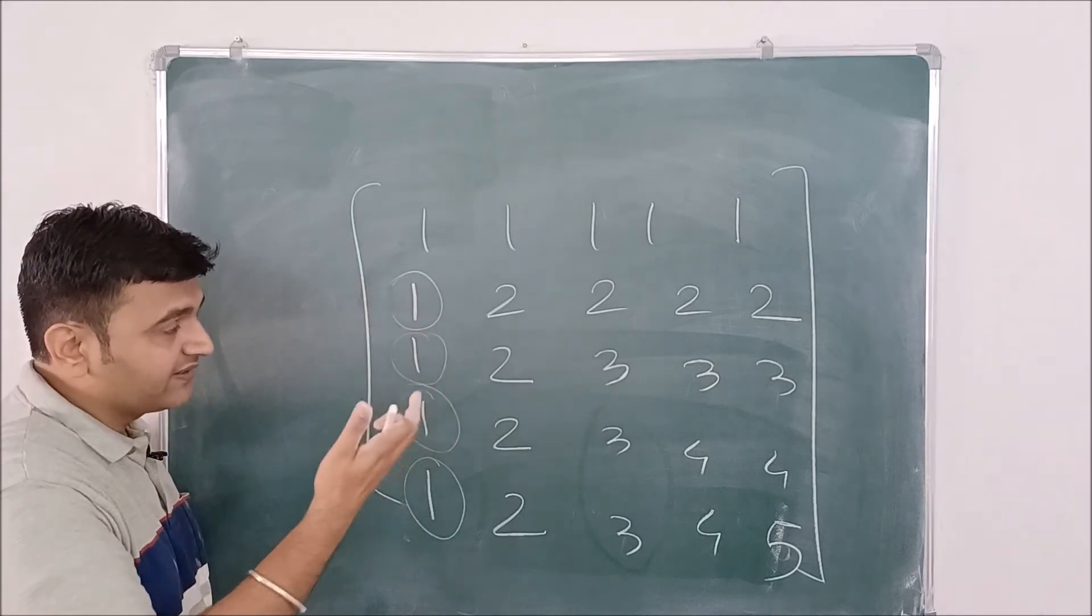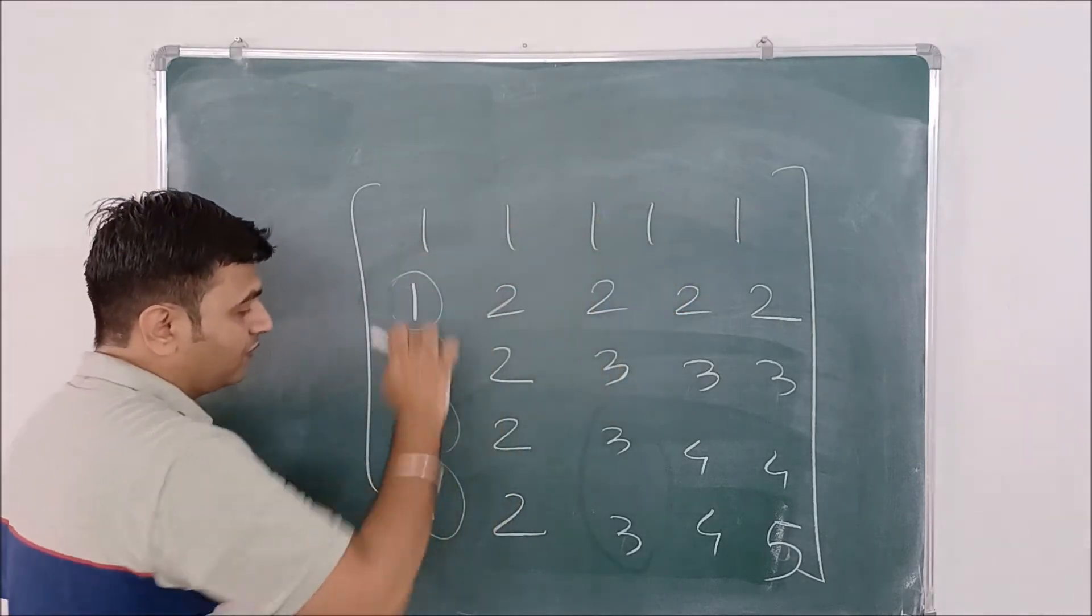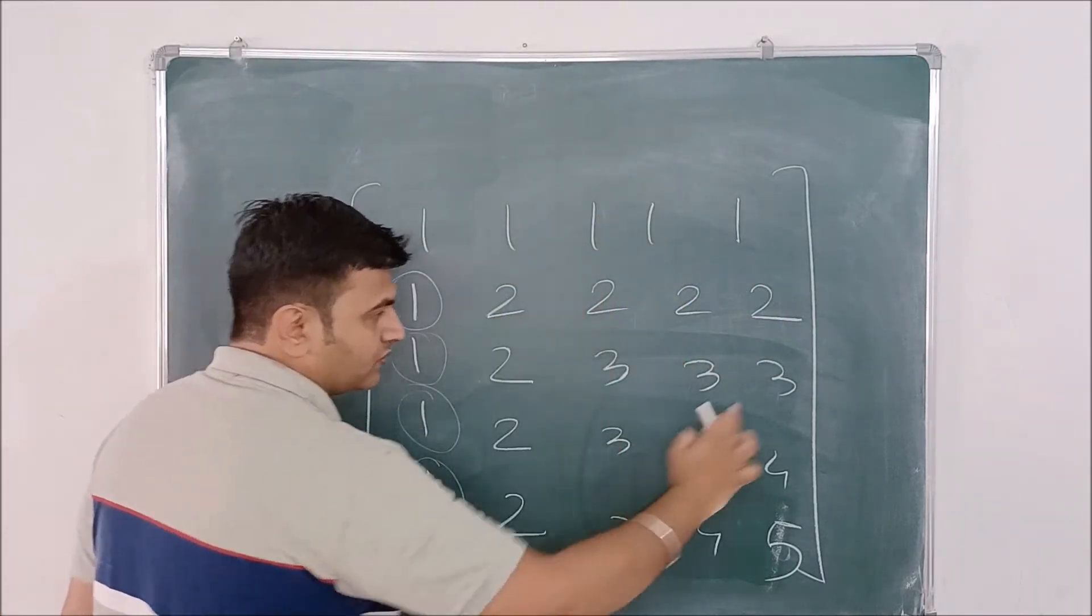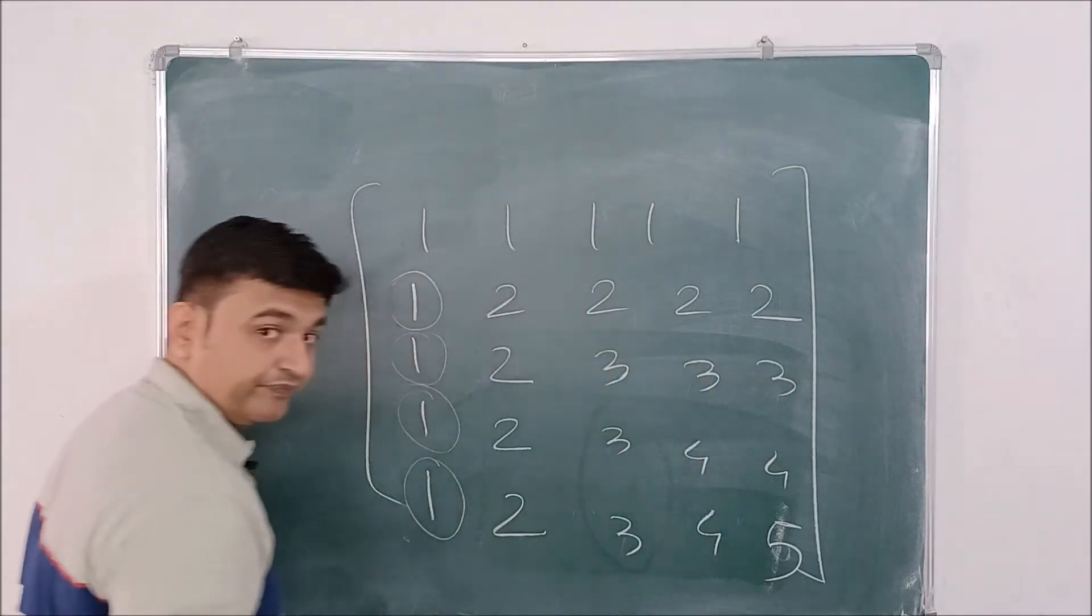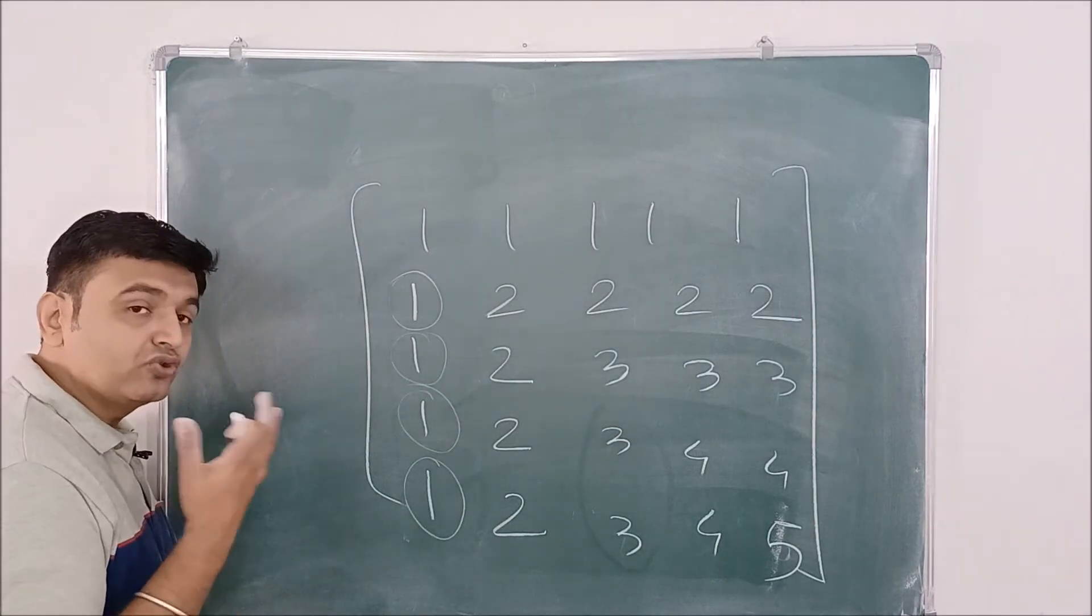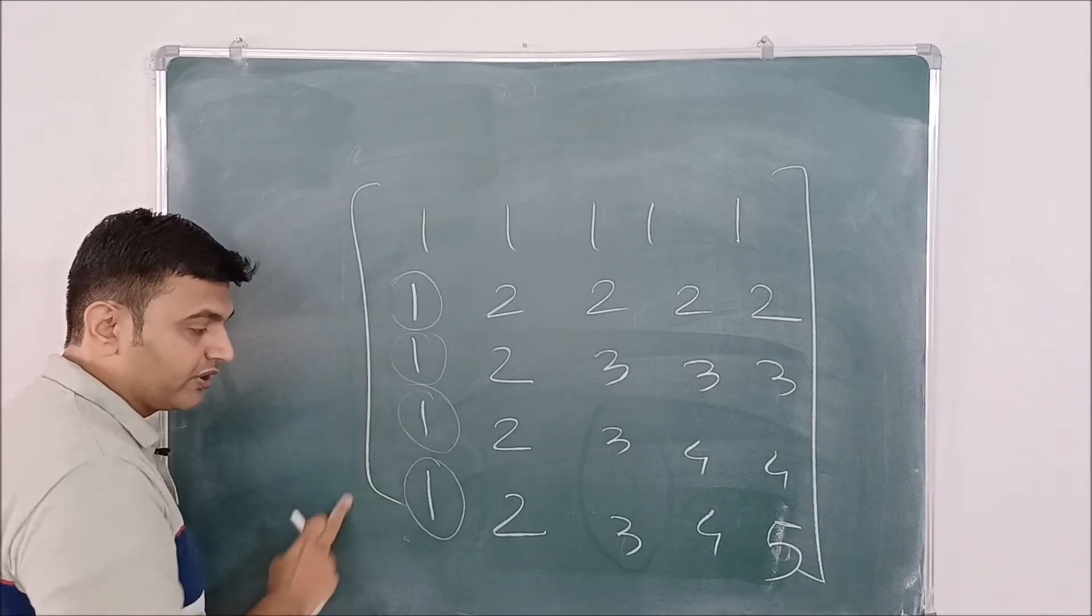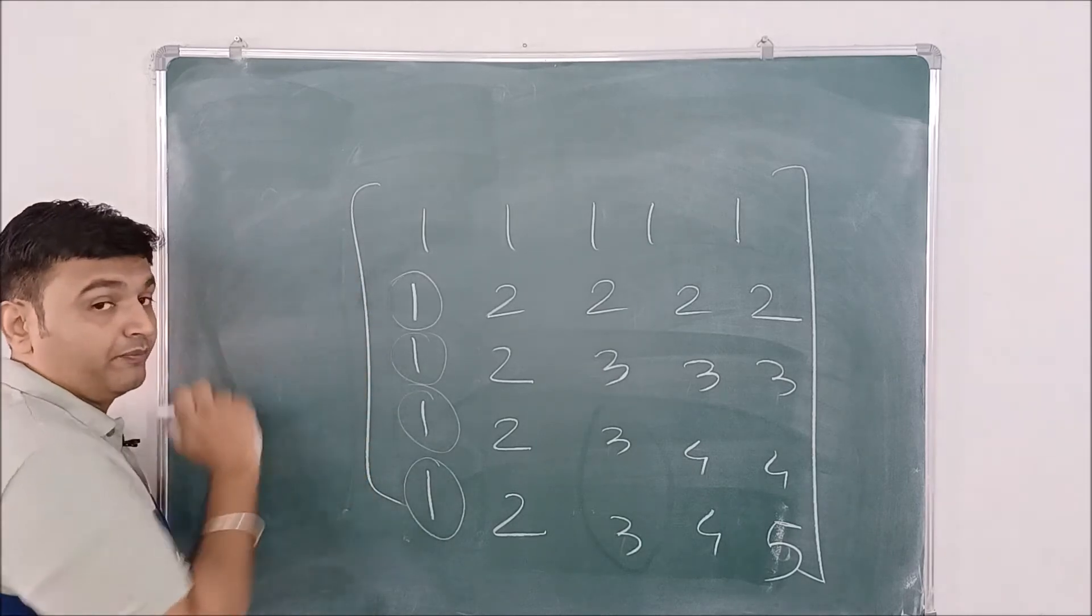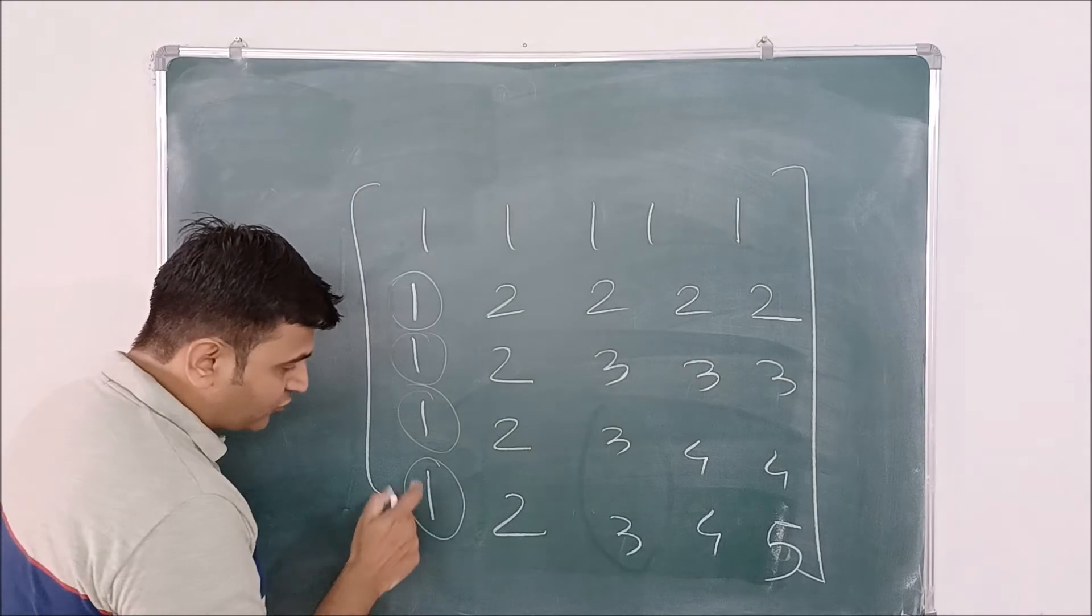So if you observe this matrix, this has a nice pattern: one, one, two, two, three, three, four, four, five. So you have to do row operations, no doubt, but then you have to do them smartly. Now, instead of going from top to bottom, you go from bottom to top. So what I'm saying, you first observe, see here only the first entries are same.